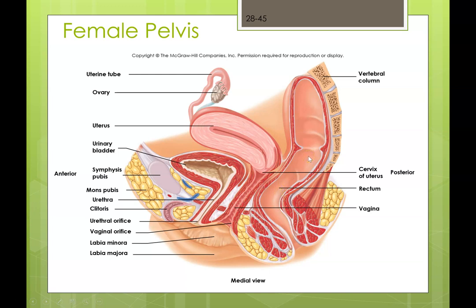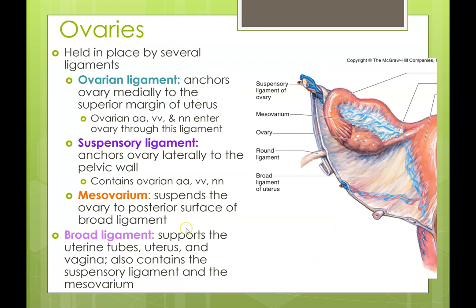Looking at the external genitalia, we have the clitoris anteriorly, and laterally we see the labia minora surrounded even more laterally by the labia majora.